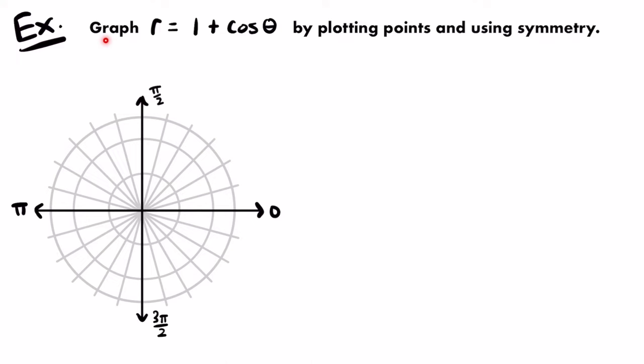For a given polar equation r equals f of theta, if f of theta equals f of negative theta, the graph has symmetry about the polar axis. If f of pi minus theta equals f of theta, there's symmetry about the vertical axis theta equals pi divided by 2. As a last resort, you can check for symmetry about the pole: if f of theta plus pi equals negative f of theta, the graph can be rotated 180 degrees and have the same shape.